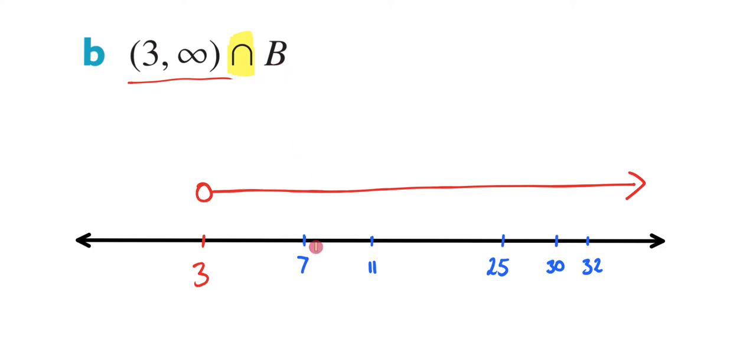And hopefully you can see now that the points that these two share are actually everything inside B. So I have 7, I have 11, I have 25, I have 30, I have 32. All of these are the places where I have an intersection, the places where both of these things share these points. So my answer is going to be, I could either write just B, that would be correct, or if I wanted to, I could write in all the elements of B. So 7, 11, 25, 30, and 32. These are the elements that they both share.